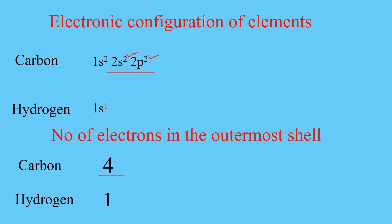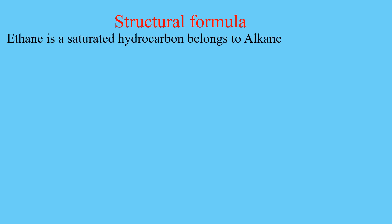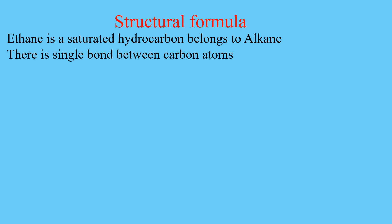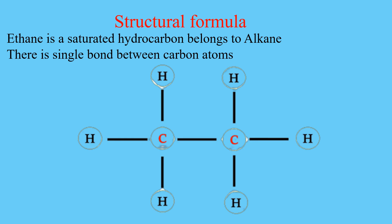Now we will draw the structural formula of ethane. Ethane is a saturated hydrocarbon belonging to the alkane series, and there is a single bond between the carbon atoms. Ethane has two carbon atoms and there is a single bond between both carbon atoms.